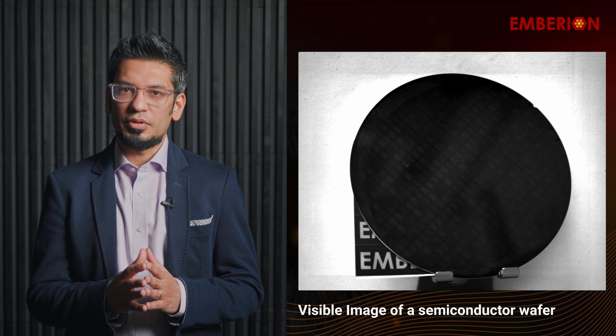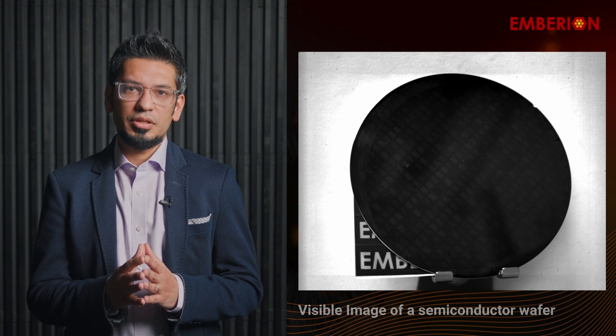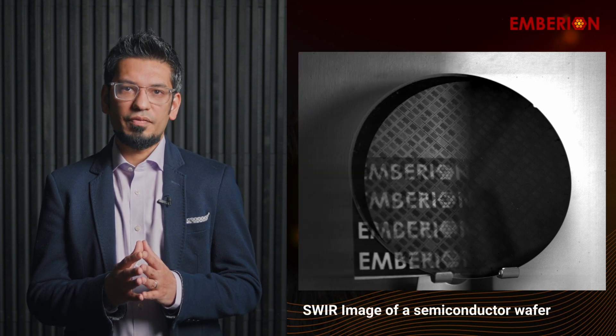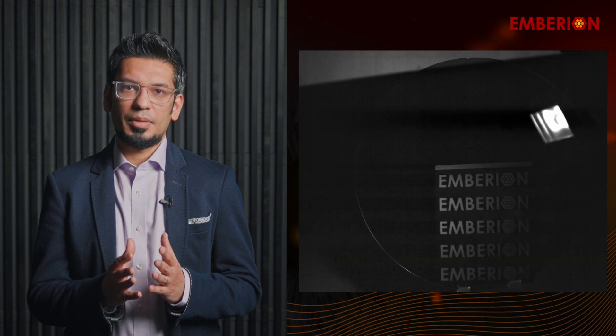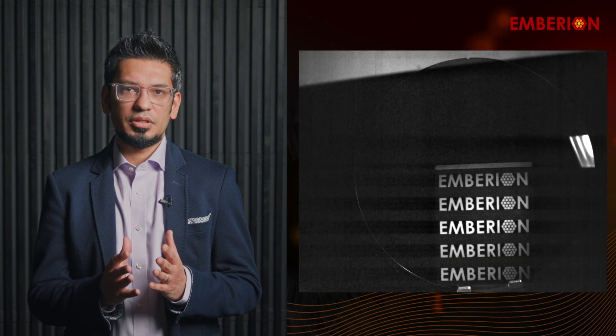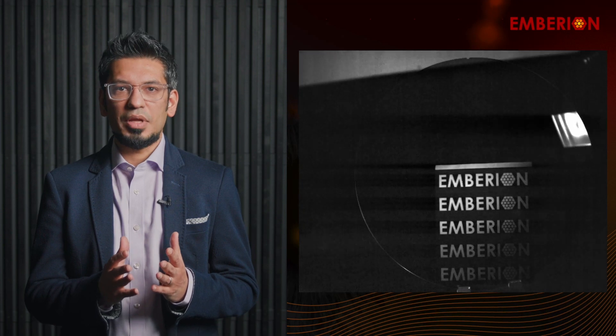The question is, how is it useful? In one of the examples, we are showing how you can see through a silicon wafer and observe the Embarian logo. Quality inspection for semiconductor crystals, ingots, and wafers can be enabled by investigating internal defects, voids, cracks, or even micro cracks, which can grow over time.